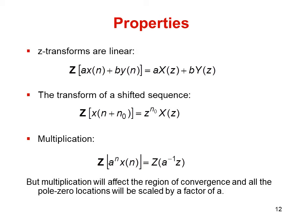Now we take a look at some properties of the Z-transform. The Z-transform is linear. So if we take the Z-transform of a*x[n] plus b*y[n], it can be written as a times X(z) plus b times Y(z). The transformation of a shifted sequence: Z-transform of x[n plus n0] equals z to the power n0 times X(z). The multiplication property: if we take the Z-transform of a function with a coefficient a^n, then its Z-transform will be X(z/a). Multiplication will affect the region of convergence and all pole-zero locations will be scaled by a factor of a.